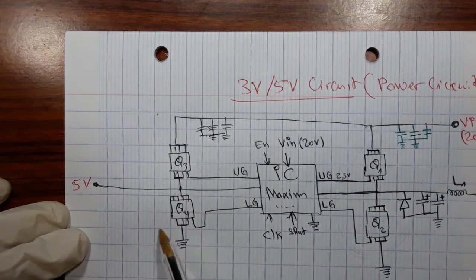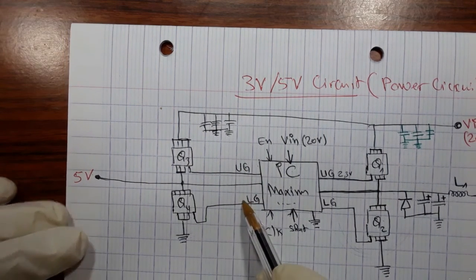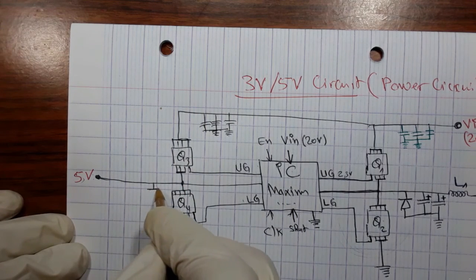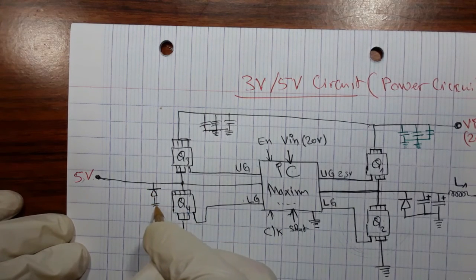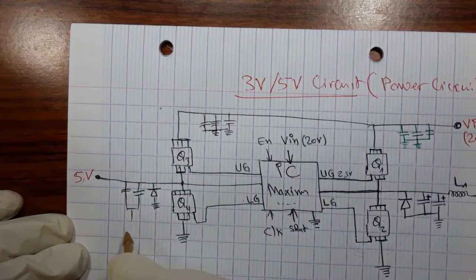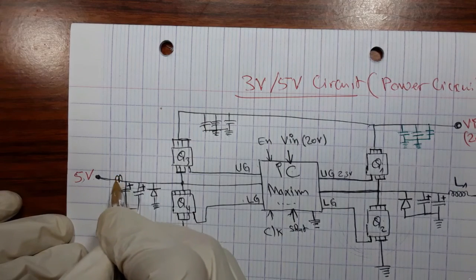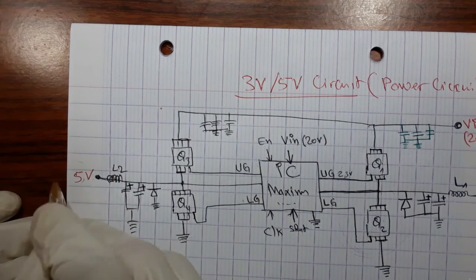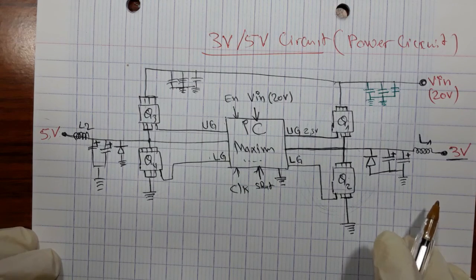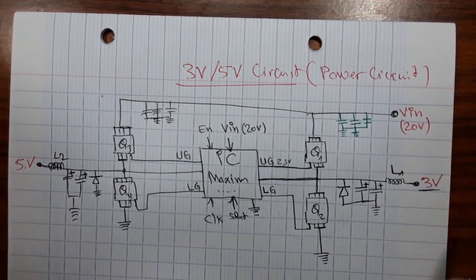The 5V will be generated by these two MOSFETs when they receive the upper gate and lower gate control signals. This 5V will pass through some components — a diode for protection, capacitors raised to the ground (chemical or polarized capacitors), and then through a coil L2 — and there we will get 5V. This is the working principle of every circuit in the motherboard — this is the 3V and 5V power supply circuit.